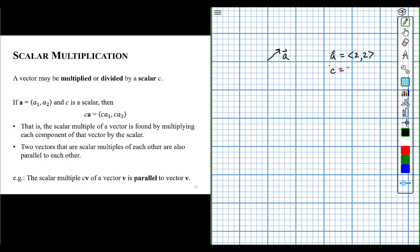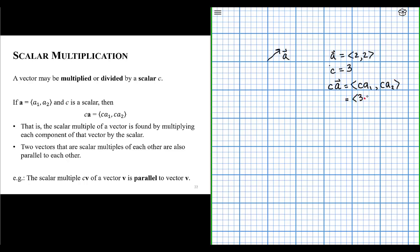So we will say we have a scalar c equal to 3. So we are going to take the scalar c, multiply it to vector a. So when you multiply a scalar to a vector, you're really multiplying that scalar to each component of the vector, to the first component of the vector and the second component of the vector. So for us, this is 3 times 2 for the x component and then 3 times 2 for the y component.